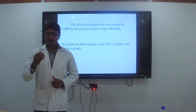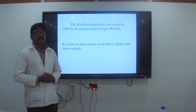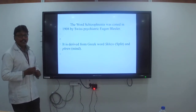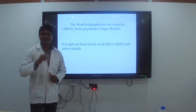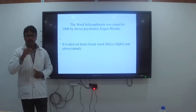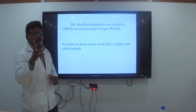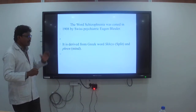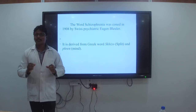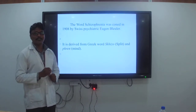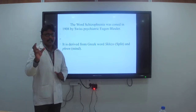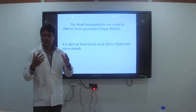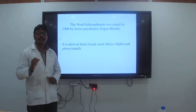First, the introductory part. The word schizophrenia was first coined in the year 1908 by the Swiss psychiatrist Eugen Bleuler. He split the word schizophrenia into two words: schizo and phren. Schizo means split and phren is related to the mind. Combining these two, the word schizophrenia was coined, derived from the Greek word.